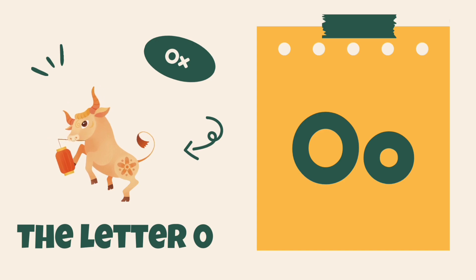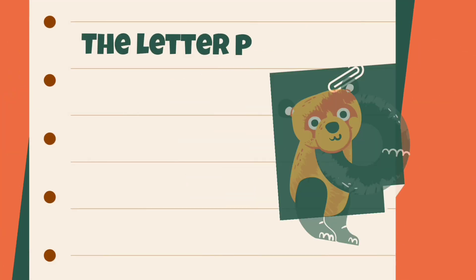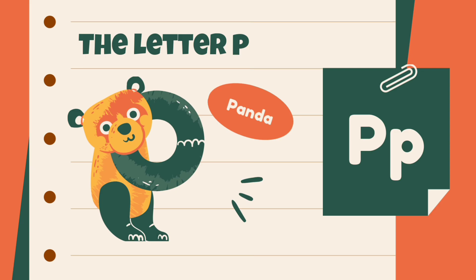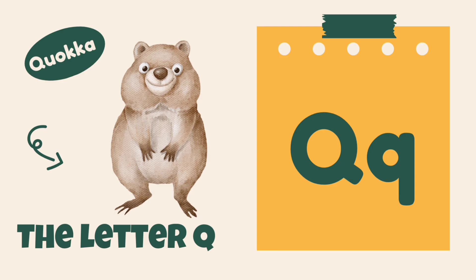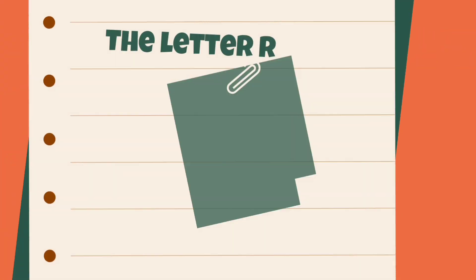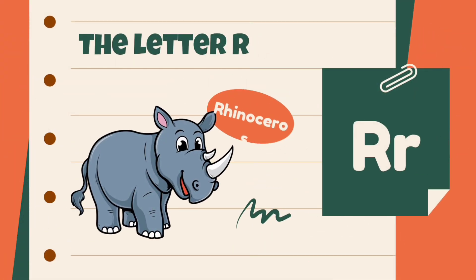ox. P is for panda, panda. Q is for quokka, quokka. R is for rhinoceros, rhinoceros.